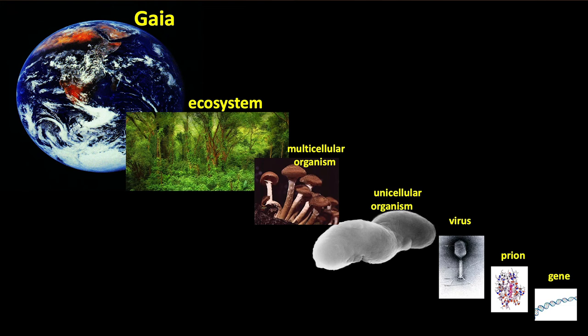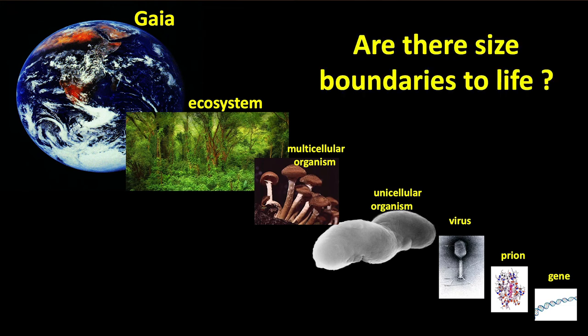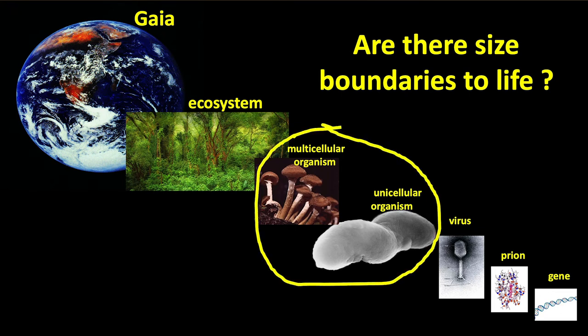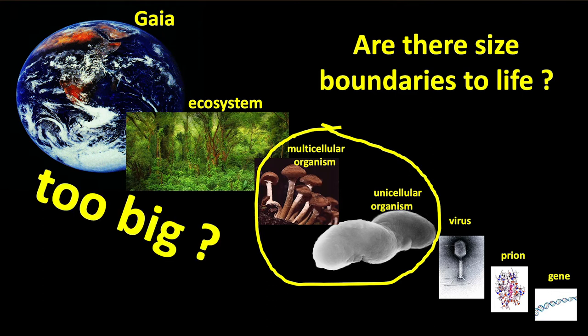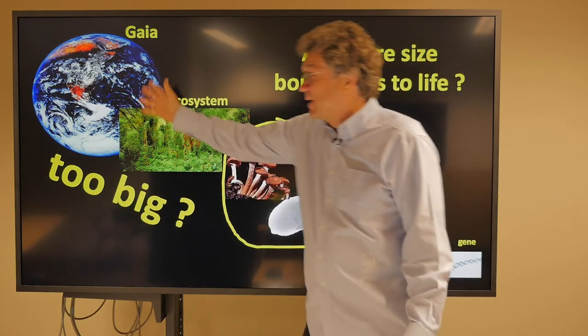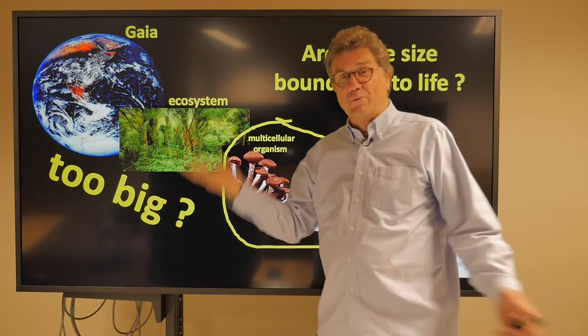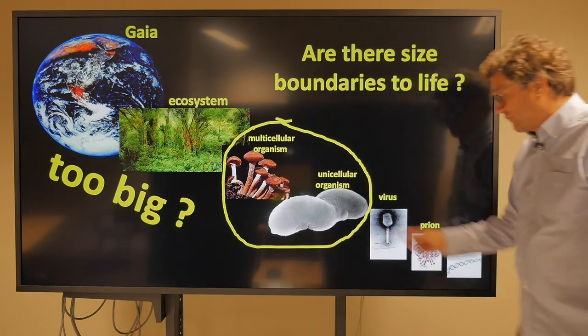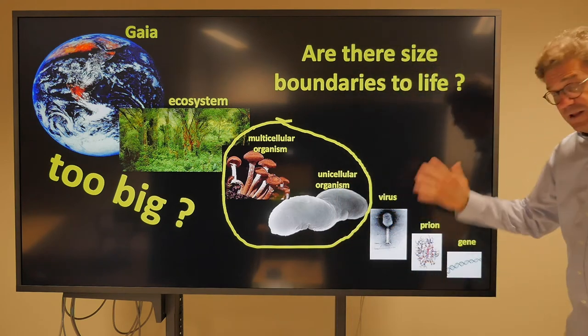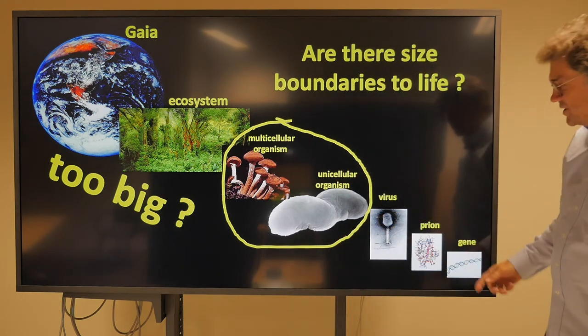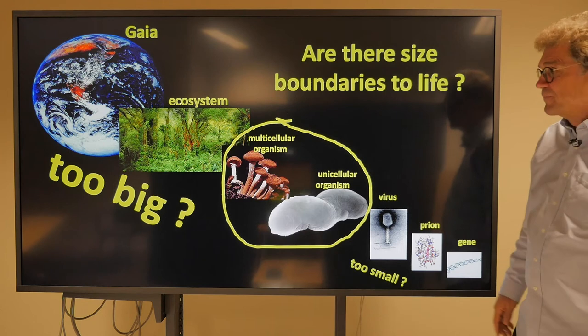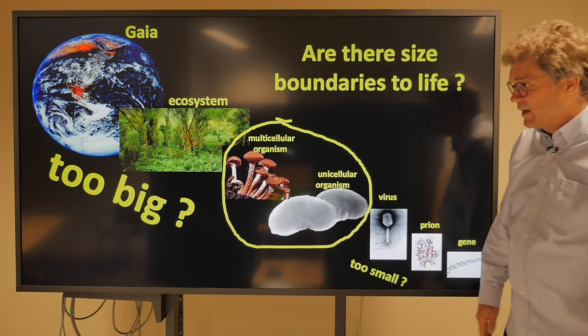Here are the different types of life and different sizes. Are there size boundaries to life? Maybe some things are too big — is an ecosystem alive? Is a city alive? Is the biosphere alive? People argue about that. How about down at the small end? Are viruses alive? They definitely argue about that. What about prions and genes — are they alive? Are these too small to be alive?